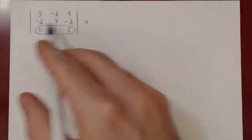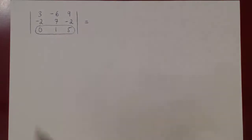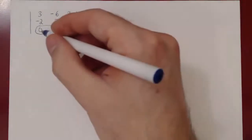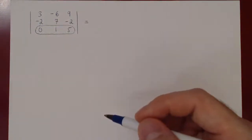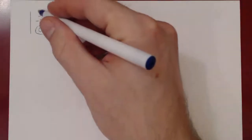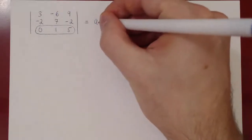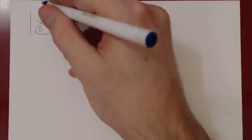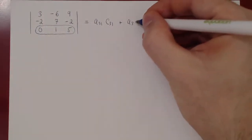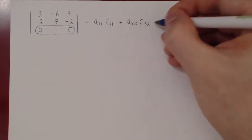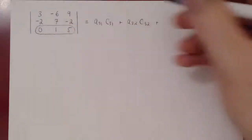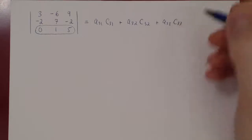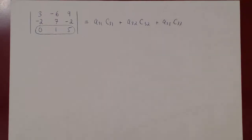Picking any other row will yield way too much work. And the same thing — if you're going to pick a column, it has to be the first column because it contains a zero. So this is the entry a31 times its cofactor c31, plus a32 times its cofactor c32, plus a33 times its cofactor c33. That's the cofactor expansion along the third row.